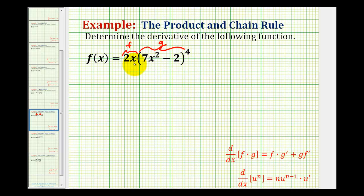So before we actually find any derivatives, let's write out the product rule. So f prime of x is going to be equal to the first function, which is 2x, times the derivative of the second function, which is the quantity 7x squared minus 2 raised to the fourth, plus the second function, 7x squared minus 2 to the fourth, times the derivative of the first function.